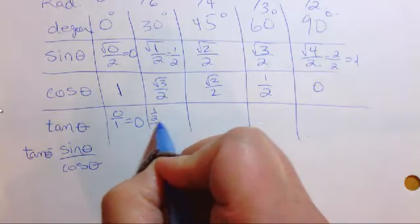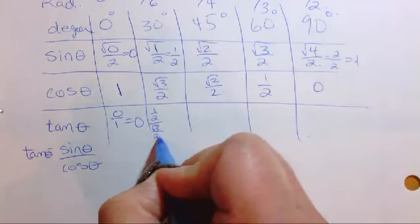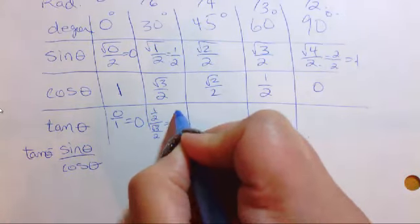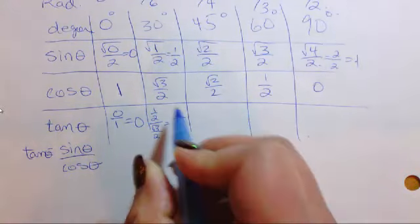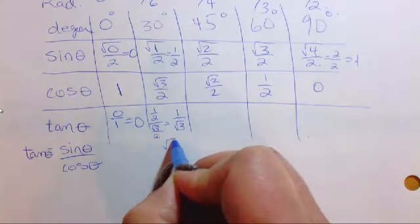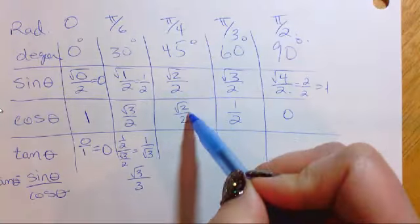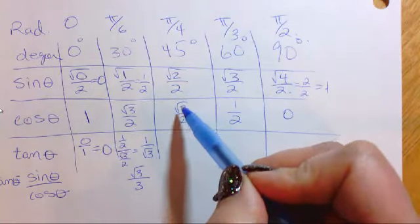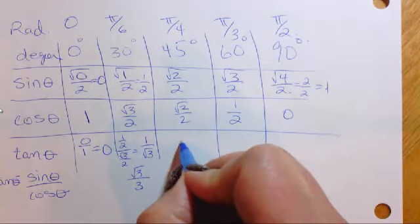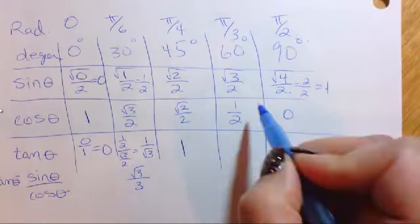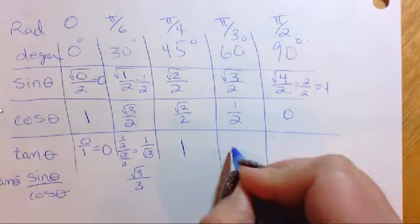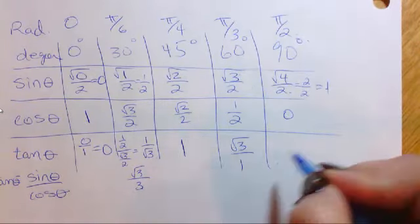1 half over root 3 over 2 that equals 1 over root 3. You could also write it as root 3 over 3. Root 2 over 2 over root 2 over 2, well it's the same thing over the same thing, so it's going to be 1.